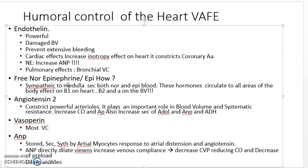An important point about ANP: norepinephrine causes an increased amount of ANP. Atrial natriuretic peptides are synthesized, secreted, and released from the atrial myocytes. When released, they cause vasodilation — dilating veins, increasing venous compliance, decreasing central venous pressure, decreasing contractility, decreasing heart rate, decreasing cardiac output and preload. They also dilate arteries, decreasing systemic resistance and blood pressure.